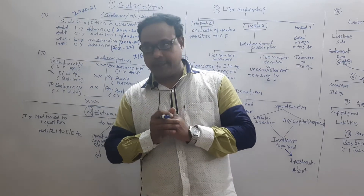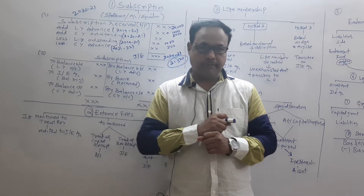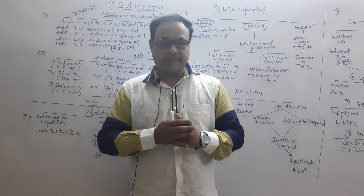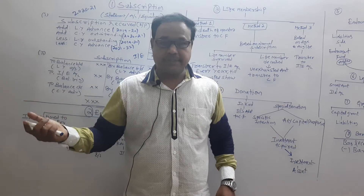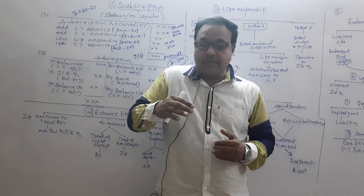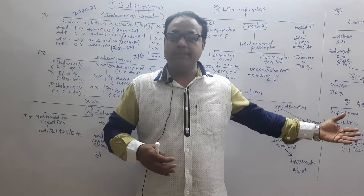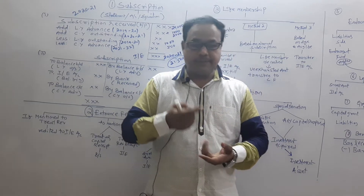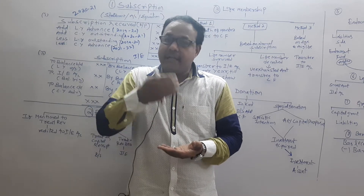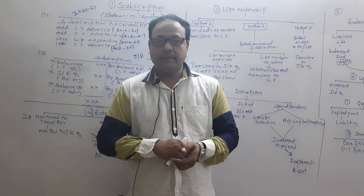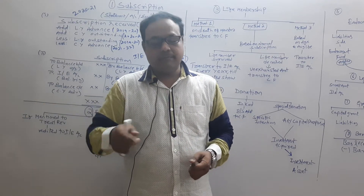Subscription is a revenue receipt. How to show it in the income and expenditure account: only what belongs to the current year. If subscription is outstanding for the current year, it is treated as an asset shown in the balance sheet. If subscription belongs to the next year but is received before rendering services, it is a liability shown in the balance sheet. Only current-year subscription goes to the income and expenditure account.